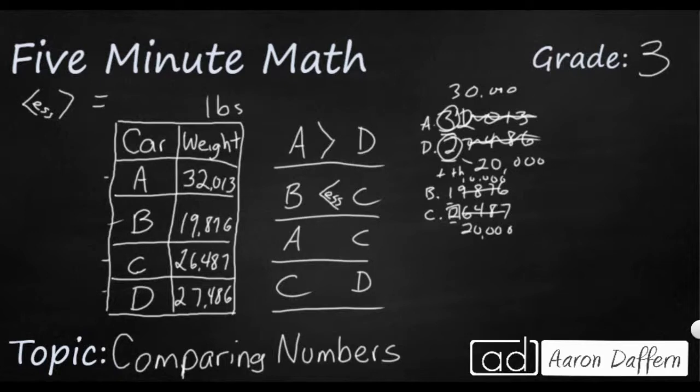So let's look at A and C. And A is going to be 32,013. C is going to be 26,487. We're getting the same answer again. The ten thousands place is going to give us the correct answer. This three is larger than this two which means the A is going to be larger. A is greater than C.